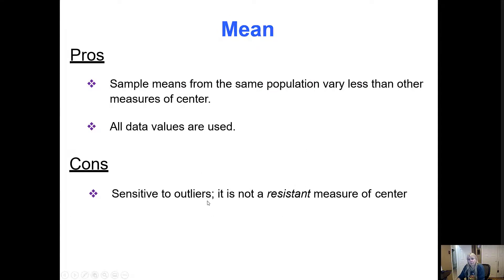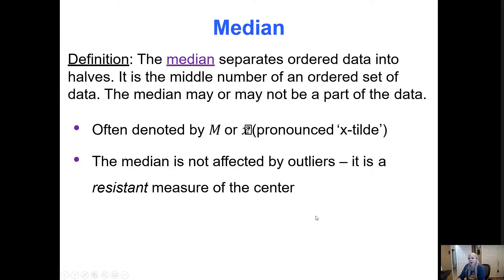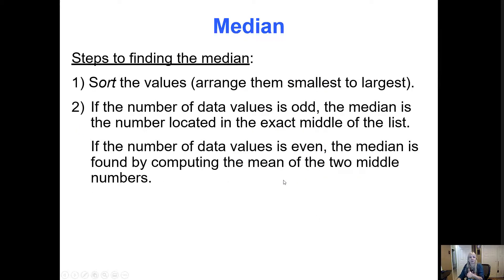The only issue with the mean is if you have, think about if I had grades and I had everybody in the class made a hundred and one person made a zero. We don't like that, but that would skew the average. And so it's very sensitive to outliers.